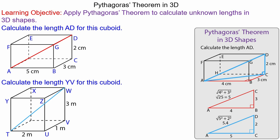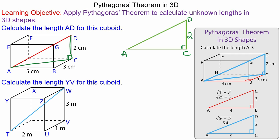In this lesson we're going to apply Pythagoras's theorem to calculate unknown lengths in 3D shapes. We're going to calculate the length A to D in this cuboid. We'll begin by finding the right angle triangle ACD. We'll label our triangle: A, C, and D, where C is the right angle. C to D is 2 centimeters.